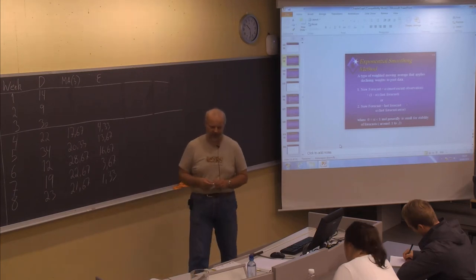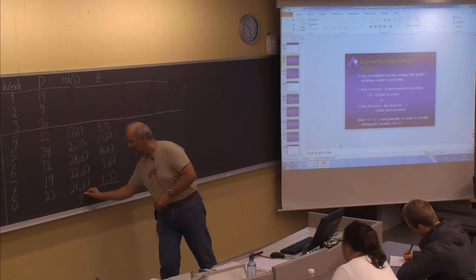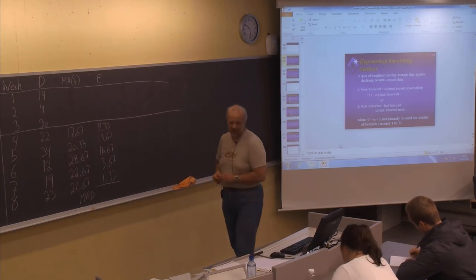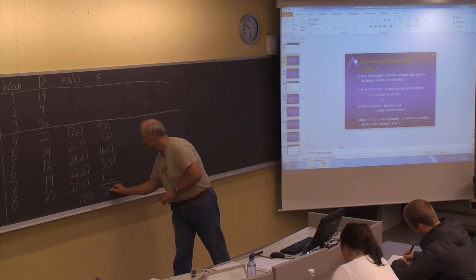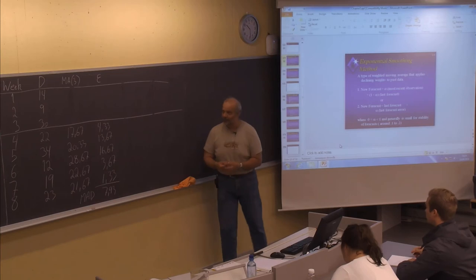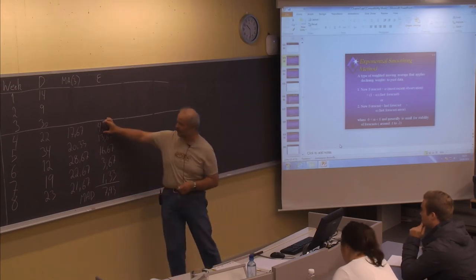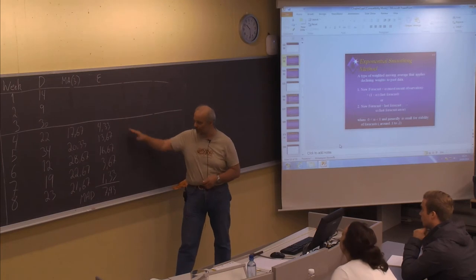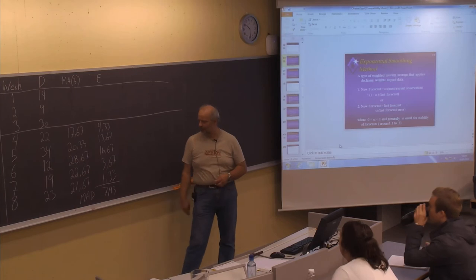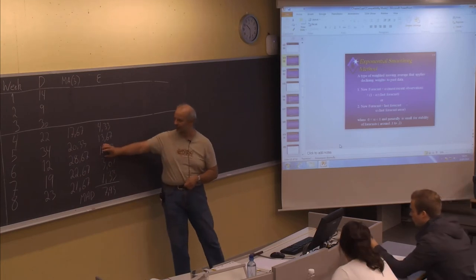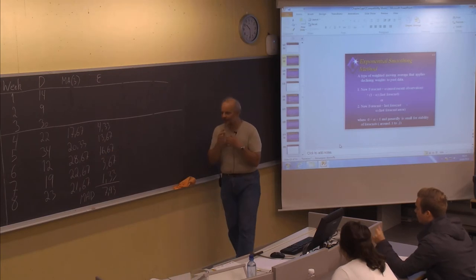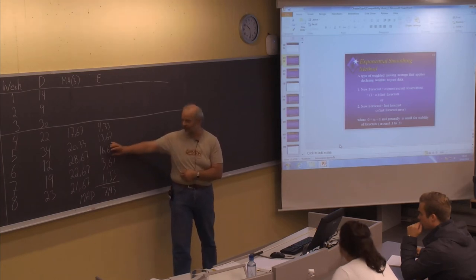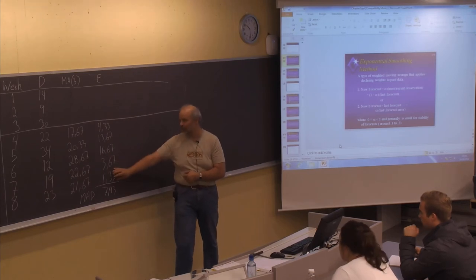Then we can easily find the MAD — mean absolute deviation — which is the average of all five absolute forecast errors, turning out to be 7.93. Also, the mean squared error — if you use that measure of forecast error — will just square each of these numbers: 4.33 squared, 13.67 squared, and so on, and make a sum of all these numbers. This means that the period with a large forecast error will have a relatively much higher effect on the MSE value, because this value to the power of 2 will be so much higher than the small values squared.